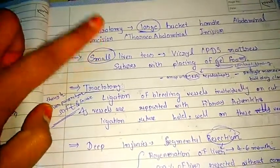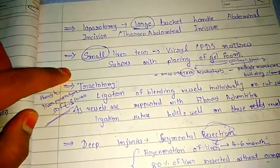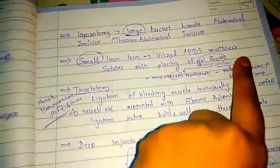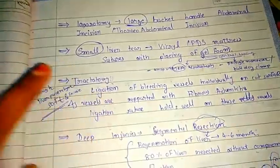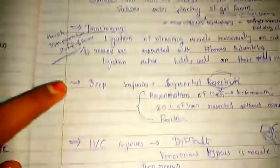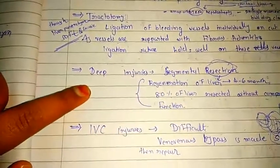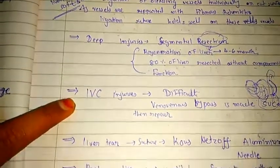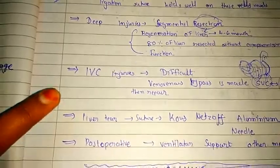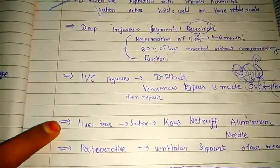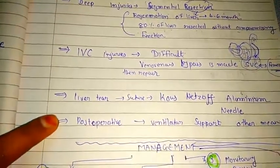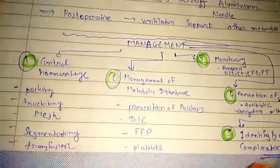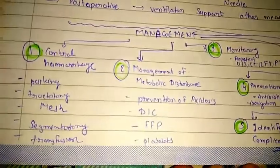Then laparotomy for large incisions, small liver tear with Vicryl or PDS mattress suture, tractotomy for deep injuries, management of IVC injuries, liver tear suturing, and post-operative care.